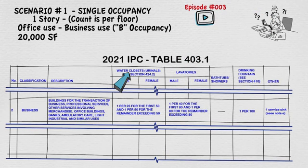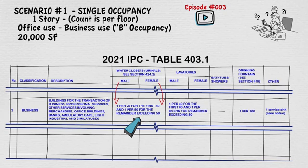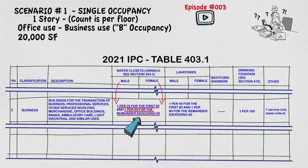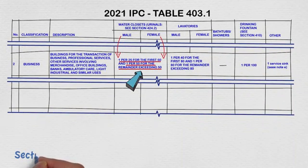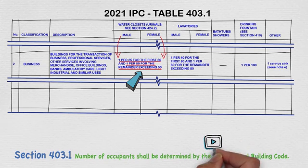The next column to the right references the number of water closets, divided into male and female. In this case, the requirements are the same for male and female. An office building requires one water closet per 25 occupants for the first 50, and one water closet per 50 occupants for the remainder that exceed 50. Section 403.1 of the Plumbing Code states that the number of occupants shall be determined by the International Building Code. See ArchiCorner episode number 10 for details.